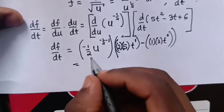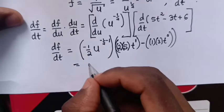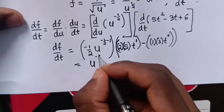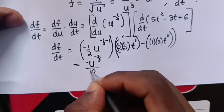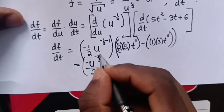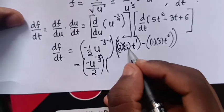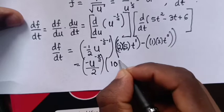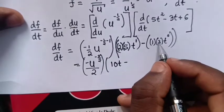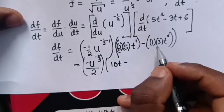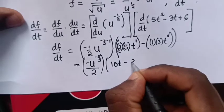So, here it equals u^(-3/2), negative over 2, bracket times, this is 10t minus 3, t^0 is 1, so it's 3.